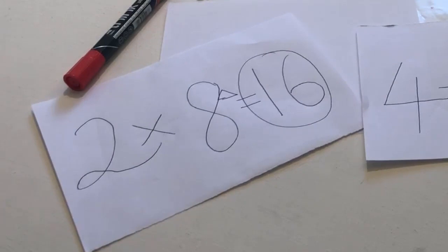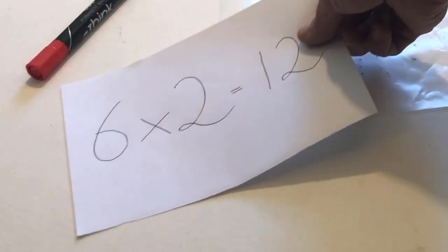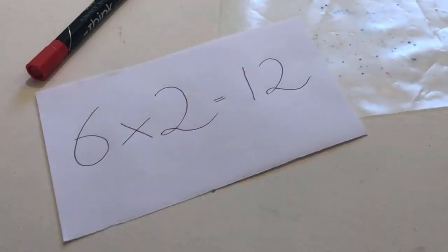Remove all the paper from the table. Now look at this sum. Say the sum: 6 times 2 equals 12.